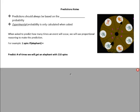Today we're going to talk about how to make a prediction based on theoretical probability. Predictions should always be based on theoretical probability. Experimental probability is only calculated when they specifically ask for it — based on results or a chart or table. For predictions, or what we expect, we use theoretical probability. Experimental probability is what actually happens in an experiment.